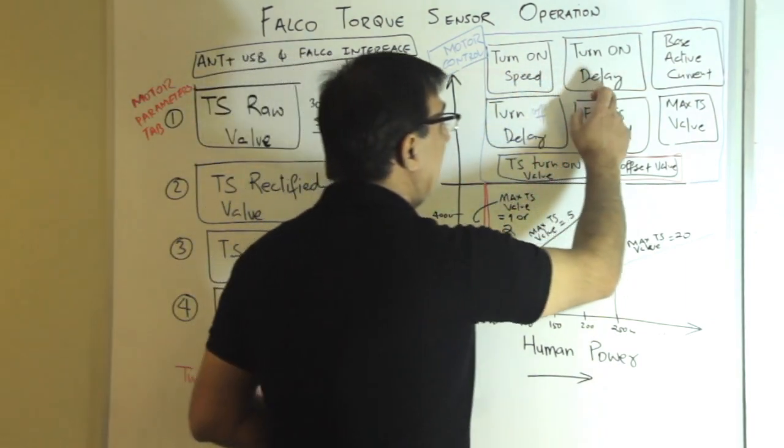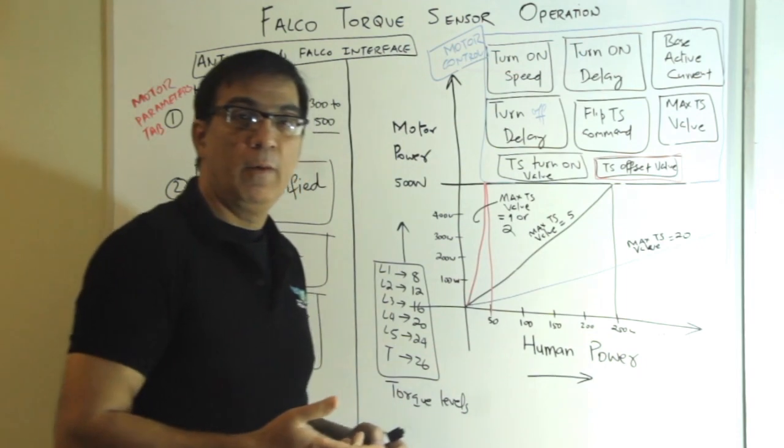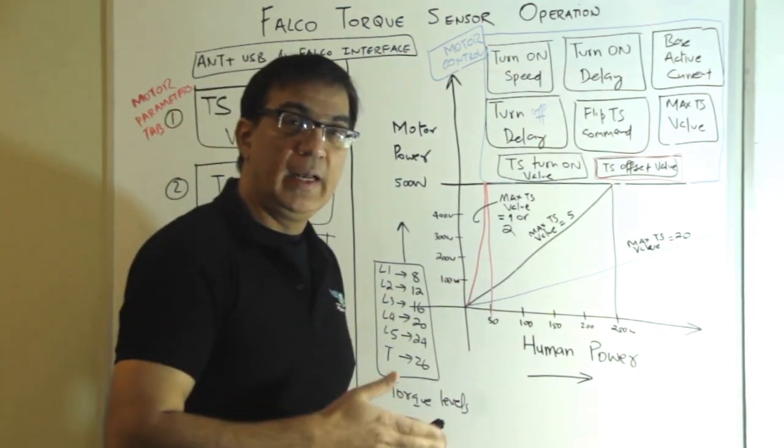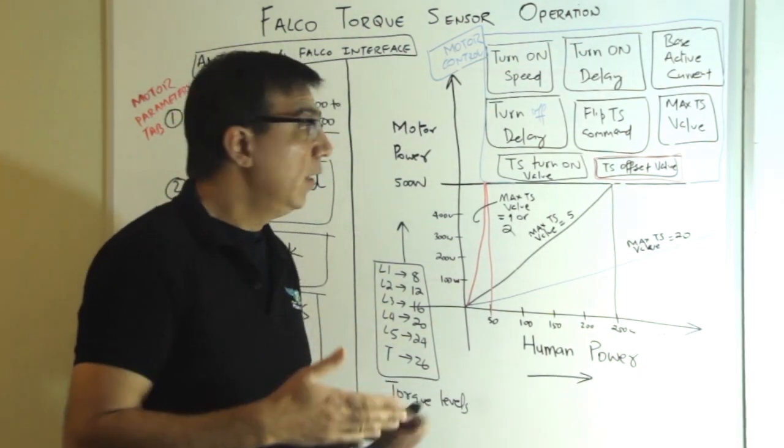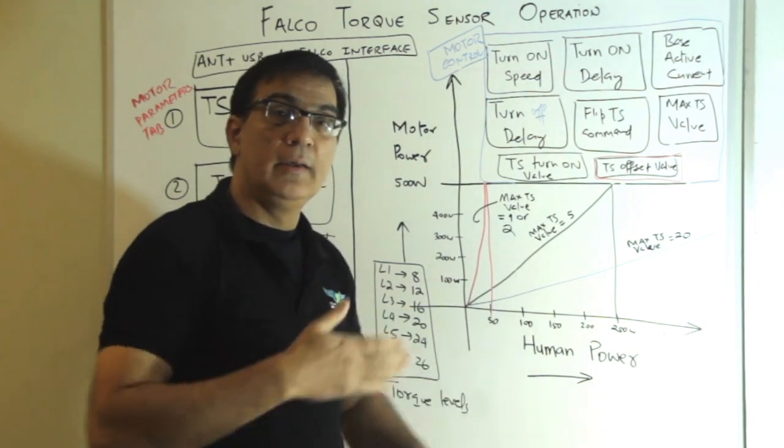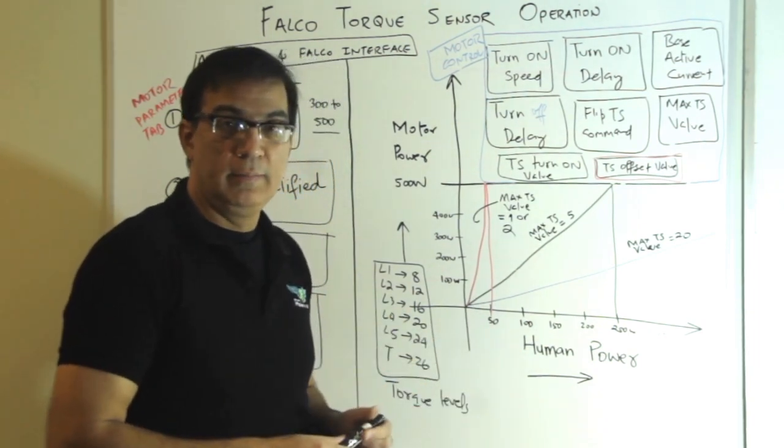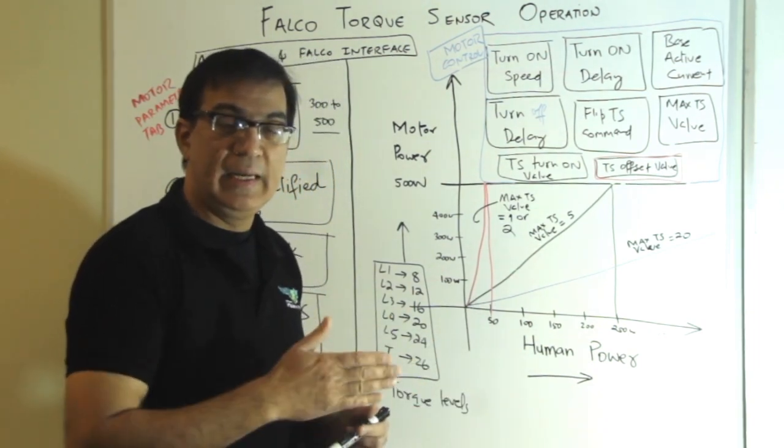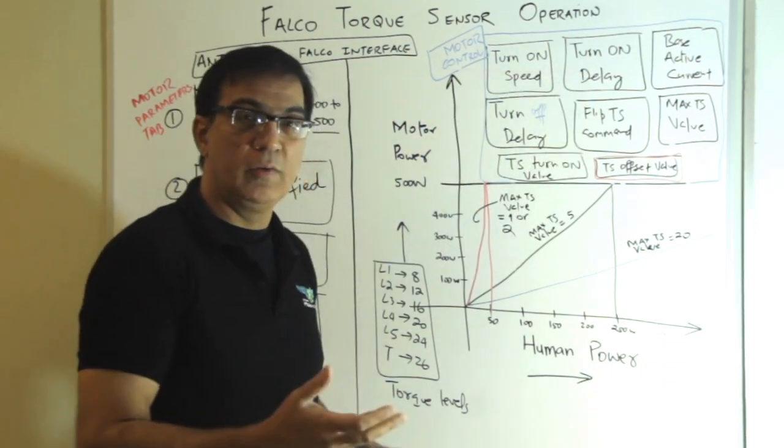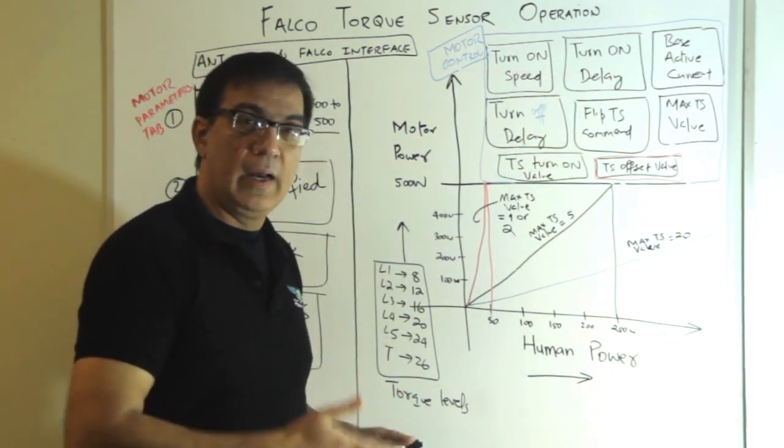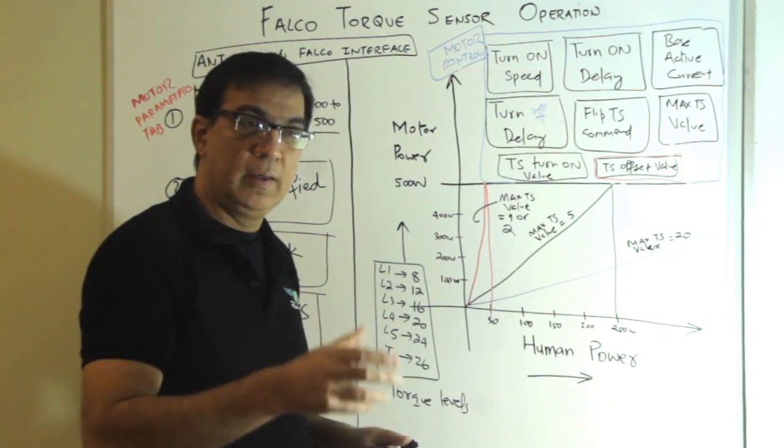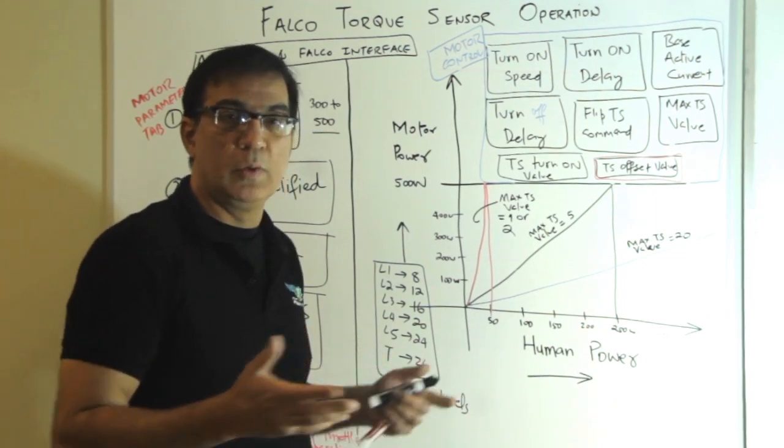Turn on delay, now this is a delay in time. This is a delay in few seconds, let's say, when the torque sensor should come on. You can set that. It's a count. It's not an exact value. It's a count. So one count, two count, etc. They are a unit of essentially 200 milliseconds.